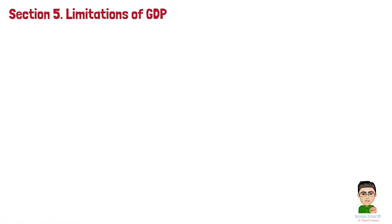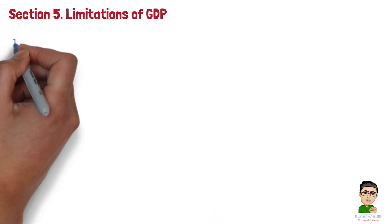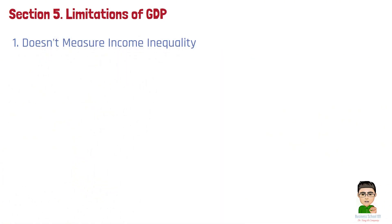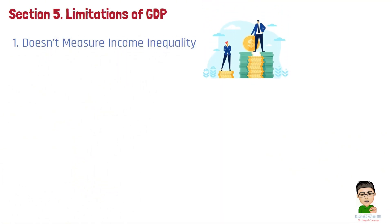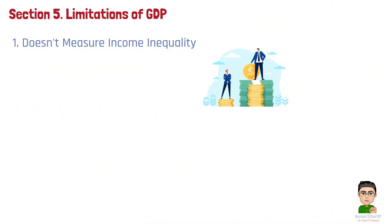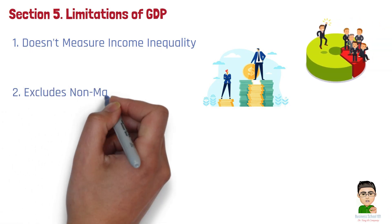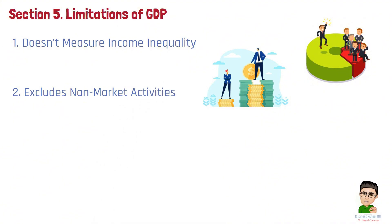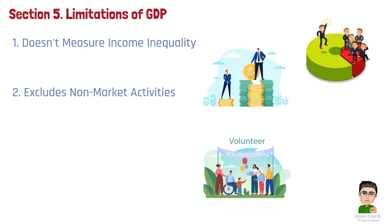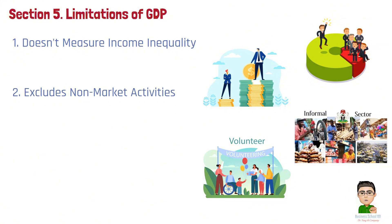Section 5: Limitations of GDP. While GDP is an essential economic indicator, it has its limitations and doesn't capture all aspects of a country's well-being. Number 1: Doesn't measure income inequality — GDP measures the total output of an economy but says nothing about how income and wealth are distributed. A country might have a high GDP, but if most of the wealth is concentrated in the hands of a few, it doesn't reflect the economic reality for most people. Number 2: Excludes Non-Market Activities — GDP doesn't account for unpaid work like housework, volunteer work, or child care, all of which contribute significantly to the well-being of society. Similarly, informal economies that are not officially recorded also go uncounted in GDP.